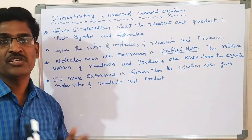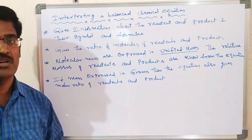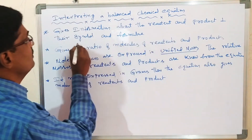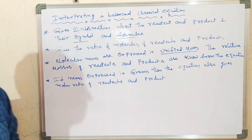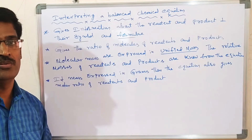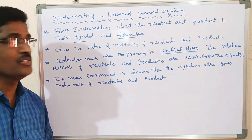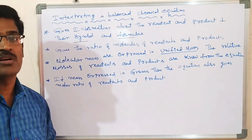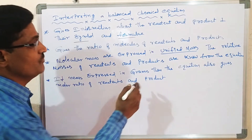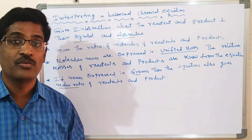Interpreting a balanced chemical equation — what information does a chemical equation give? A chemical equation gives information about reactants and products through symbols and formulas. It also gives the ratio of molecules of reactants and products. The relative masses of reactants and products are given by the chemical equation. If mass is expressed in grams, then the equation also gives the molar mass of the reactant and product.